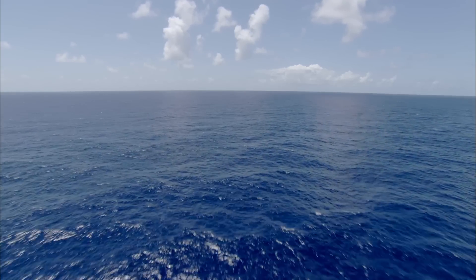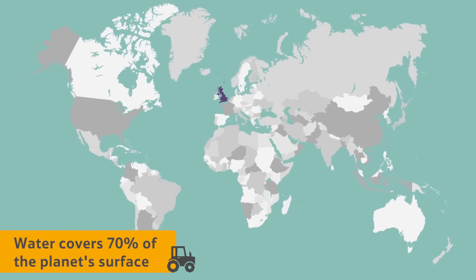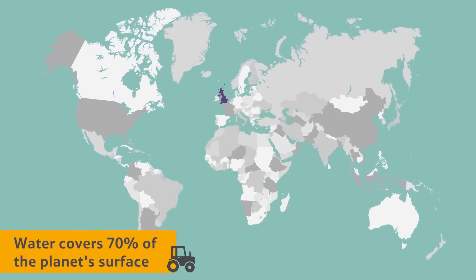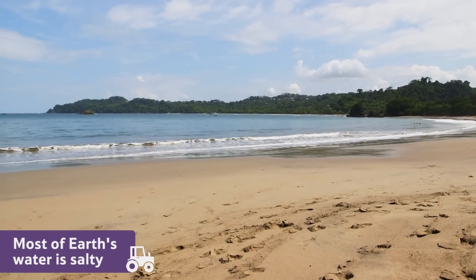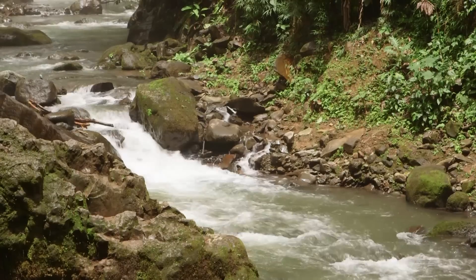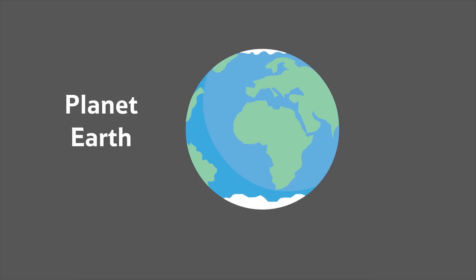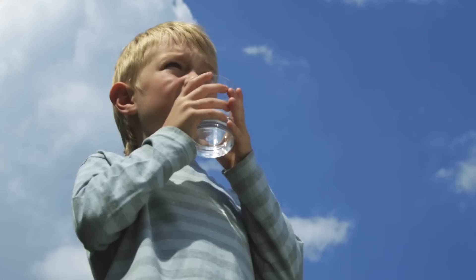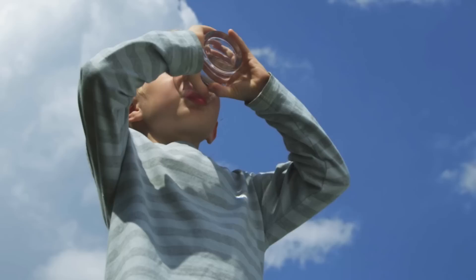There is a lot of water on Earth. It covers 70% of the planet's surface. But most of it is salty and found in the oceans and seas. Fresh water makes up only 3% of all the water we have, and most of this is locked in polar ice caps and not available for us to use. This makes clean drinkable water a very precious resource.